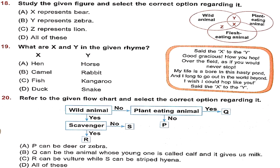Question 18: Study the Venn diagram. Y is a plant-eating wild animal, Z is a flesh-eating wild animal, and X is both plant and flesh-eating wild animal. Option A: X represents bear — bear is a wild omnivore, correct. Option B: Y represents zebra — zebra is a wild plant-eater, correct. Option C: Z represents lion — lion is a wild flesh-eater, correct. All statements are correct, so Option D is the right answer.